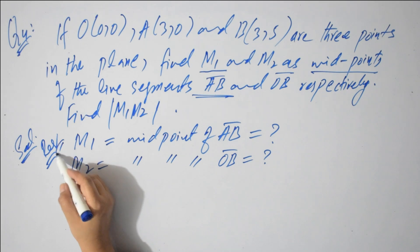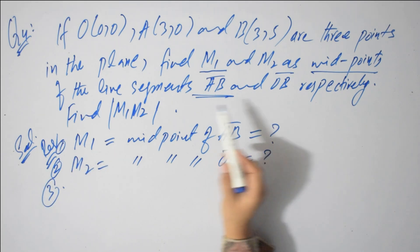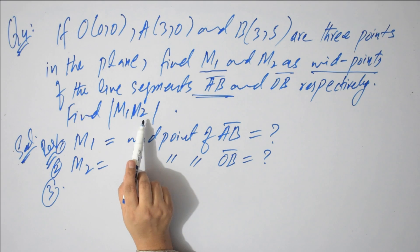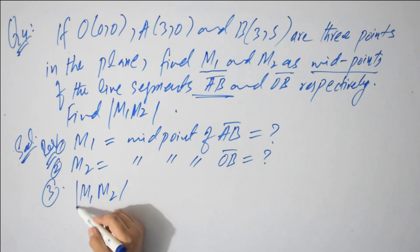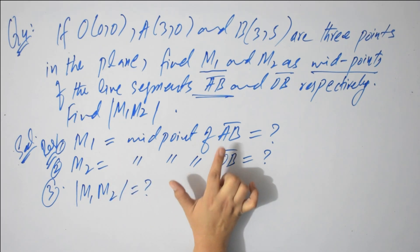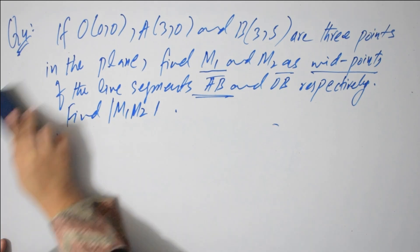And third, you will find distance between M1 and M2. First two parts, you will find midpoints coordinates. Then between them you will find distance. This is the plan or this is required. First midpoint of AB, then midpoint of OB, and then distance between these midpoints.